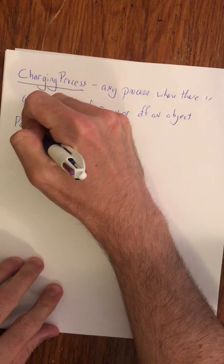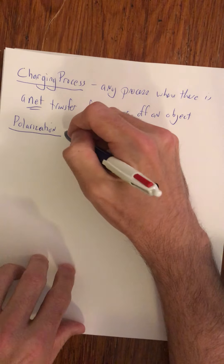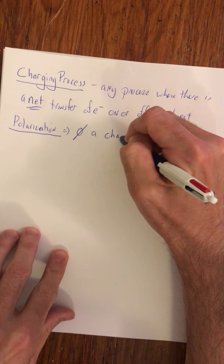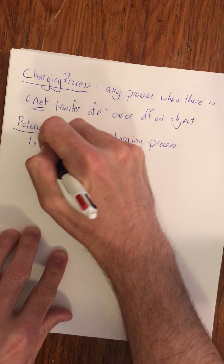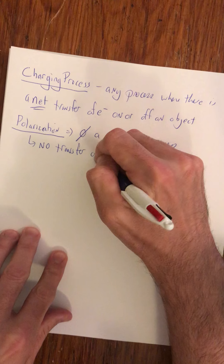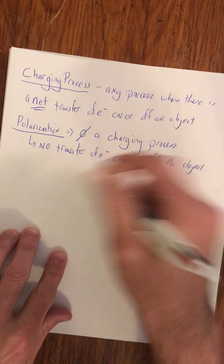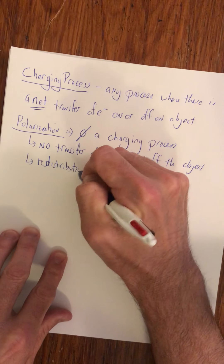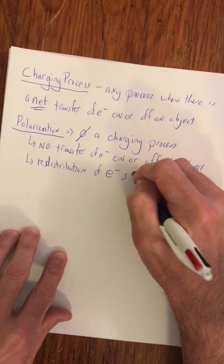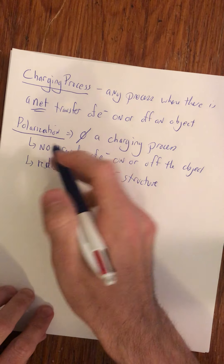Let's quickly talk about polarization, which is not a charging process. Why is polarization not a charging process? Because in polarization there is no transfer of electrons on or off the object. What happens is there's a redistribution of the existing electron structure — one end becomes more negative, leaving the other side positive where the electrons were pushed or drawn away from.